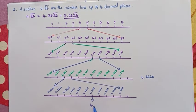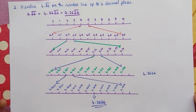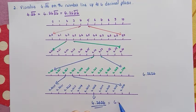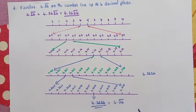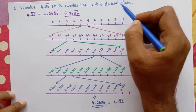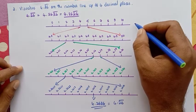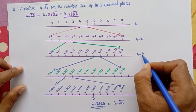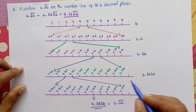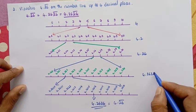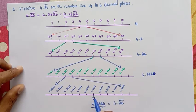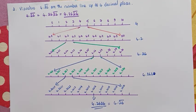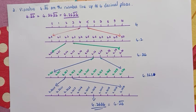This is the point — 4.2626 is here on the number line, up to four decimal places. In this process, what we got: first 4, then 4.2, then 4.26, then 4.262, and finally 4.2626. Likewise, we can further magnify it and continue the same process. This is the process — we have completed it.